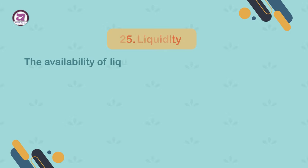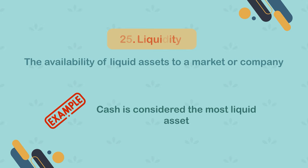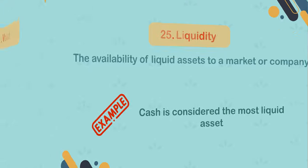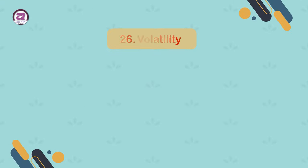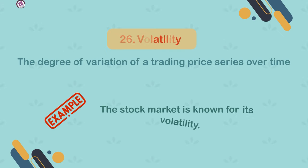25. Liquidity. The availability of liquid assets to a market or company. Example: cash is considered the most liquid asset. 26. Volatility. The degree of variation of a trading price series over time. Example: the stock market is known for its volatility.